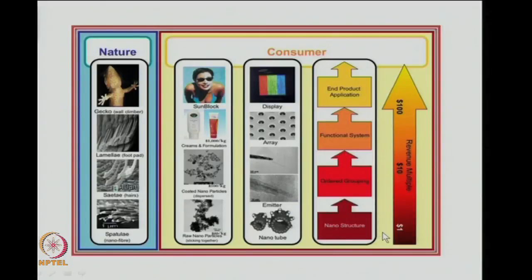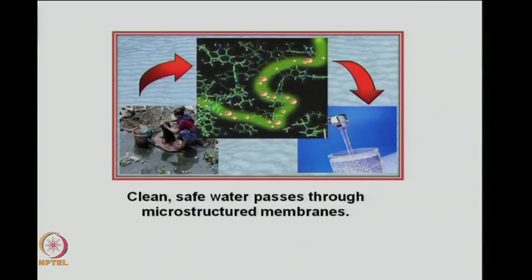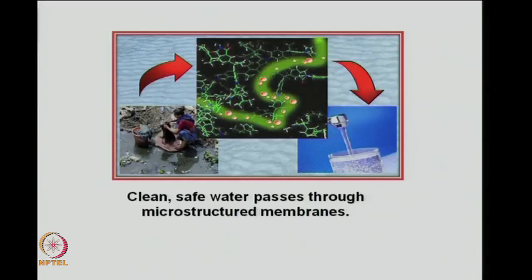From an economics perspective, nanostructures may have a certain cost, but as you move toward the finished product — with all the engineering and manipulation involved — the cost of the final product becomes much higher. Among consumer products already in the market, water purification membranes are designed to remove metal ions and biomolecules from toxic water, providing clean and safe water — a very important application for the future.